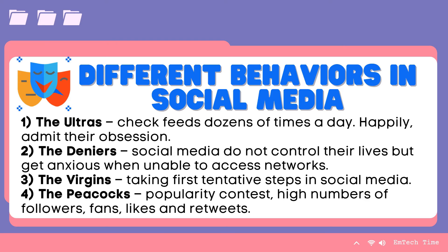The second type is the Deniers — social media does not control their lives, but they get anxious when unable to access the network. 20% of Facebook users would feel anxious or isolated if they had to deactivate their account. The third behavior is the Virgins — taking their first tentative steps in social media; 19% of people don't use any social media networks. The fourth type is the Pickups — focused on a popularity contest: high numbers of followers, fans, likes, and retweets. 1 out of 10 Twitter users want more followers than friends, and the same applies to Instagram and Facebook.